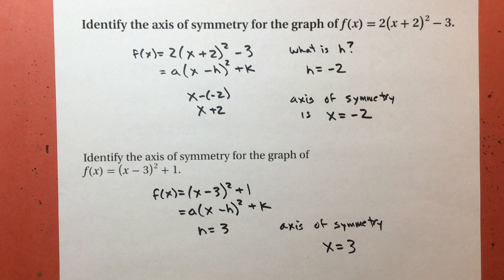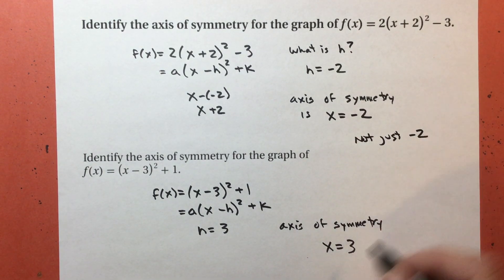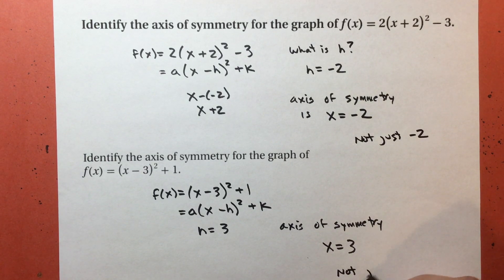Make sure not just negative 2, not just 3. Remember, it's a line, and all lines have equations. So you have to tell me the equation of the line, the equation of the axis of symmetry. Make sure you write the x equals part of it. And I will show you some of the other stuff with Desmos as we get to it.